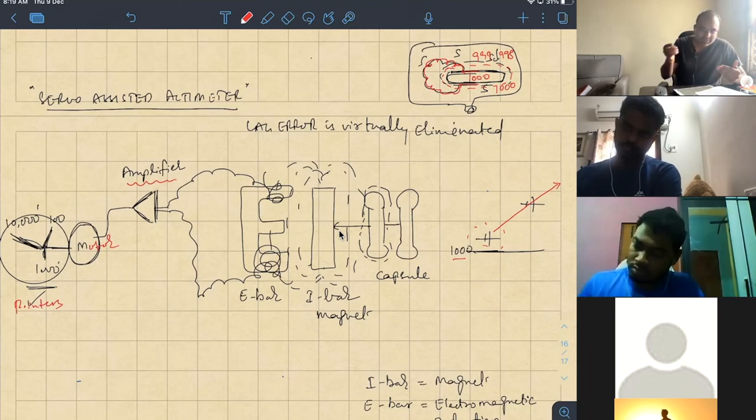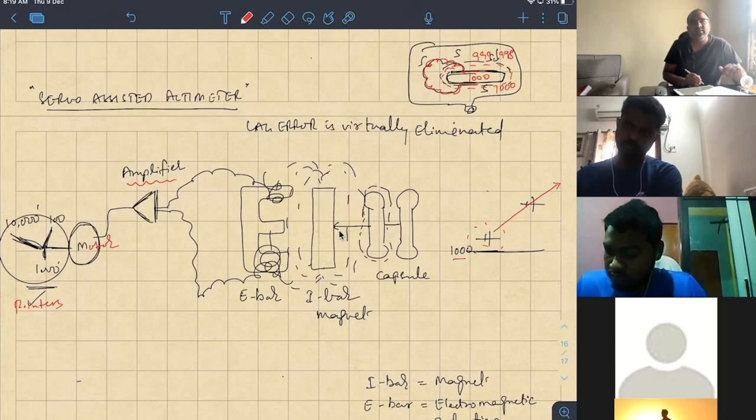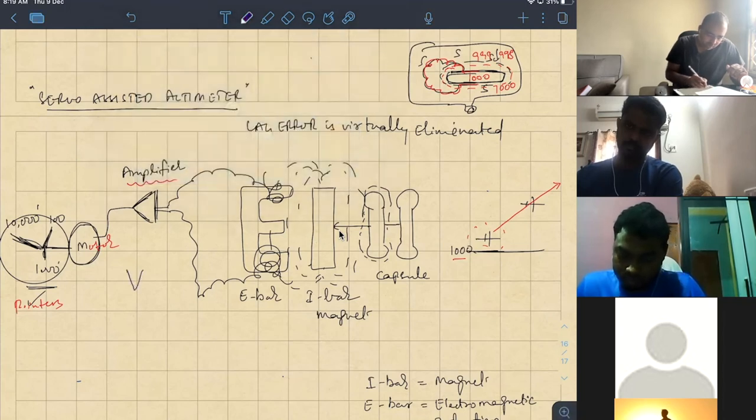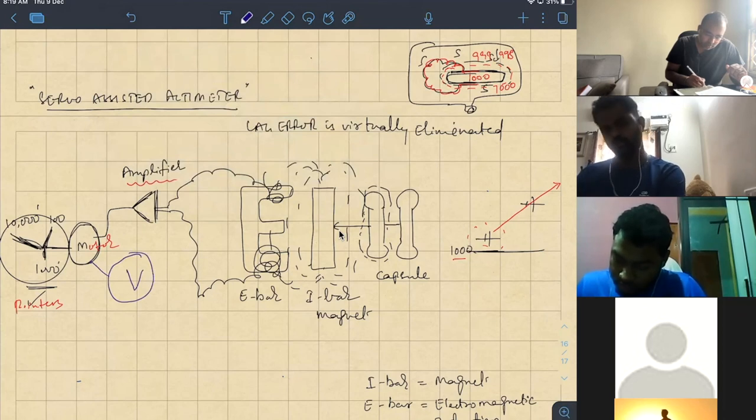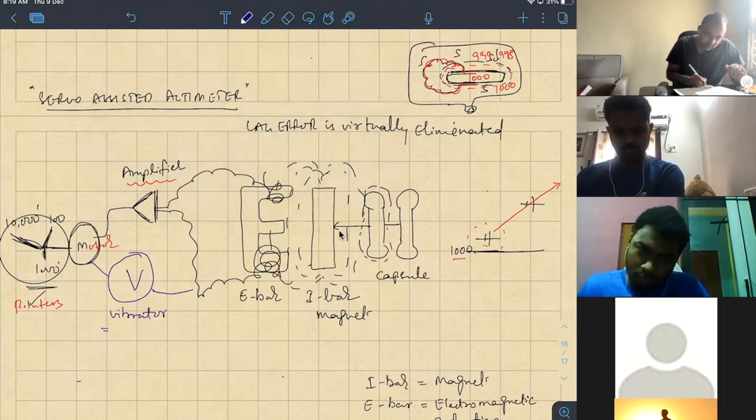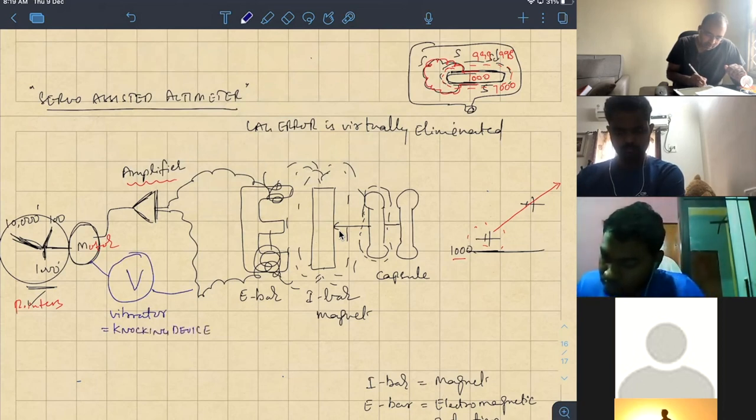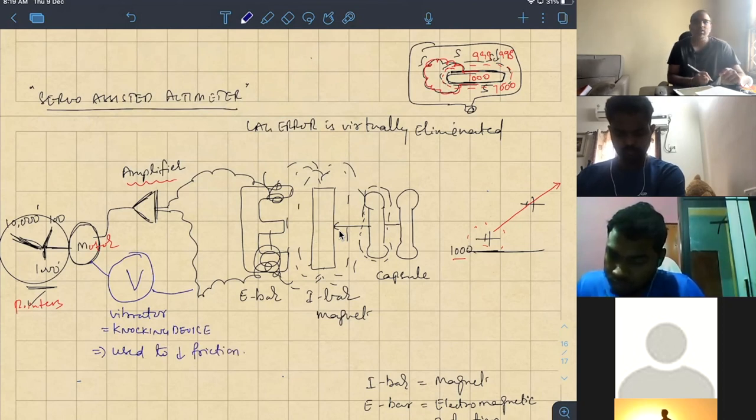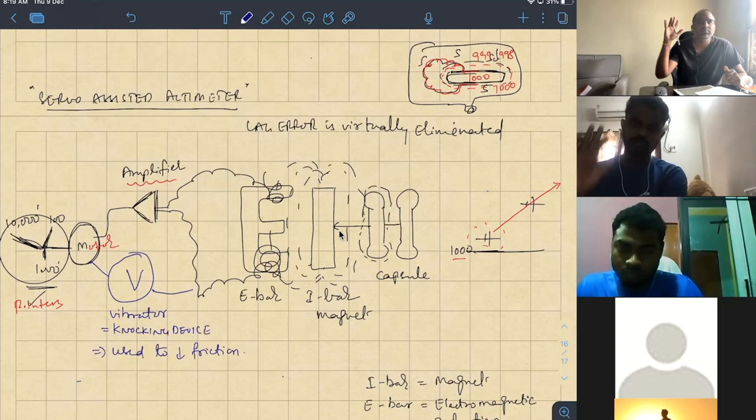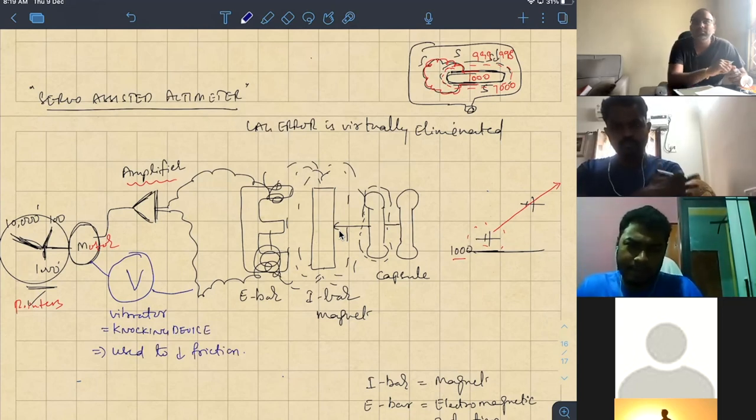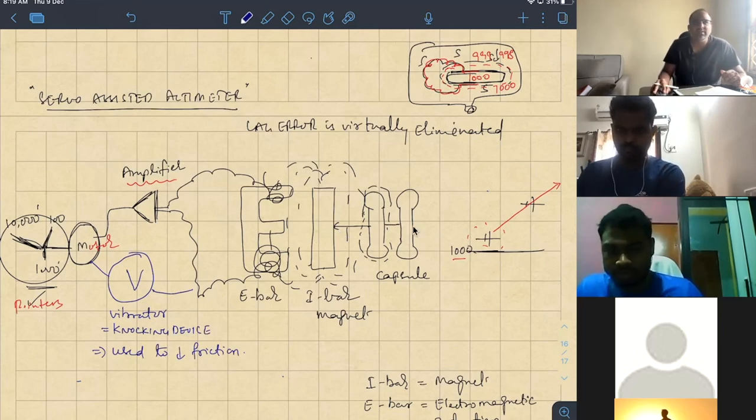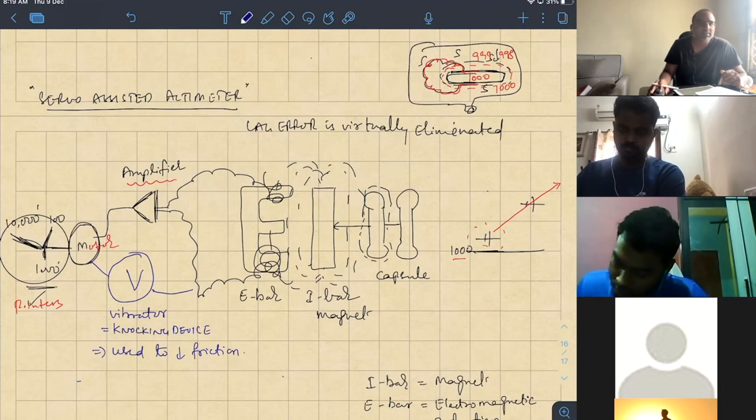So, that's why there is a device in every altimeter to decrease the friction. That is called as vibrator. Vibrator is also known as knocking device. This is used to decrease friction. Decrease friction where? Between all parts in altimeter.